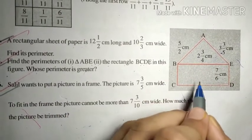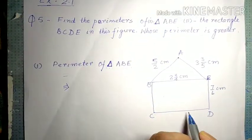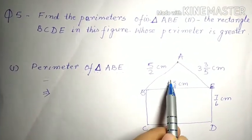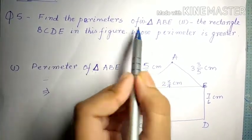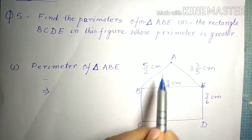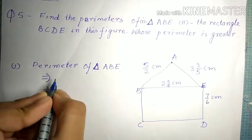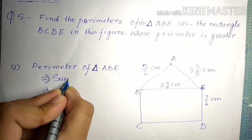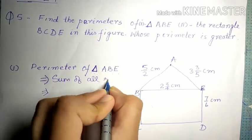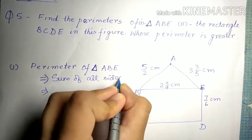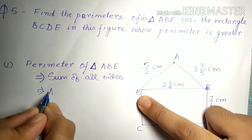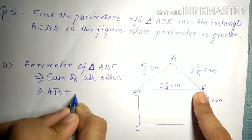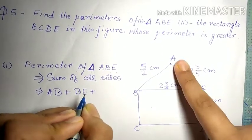There is a figure given and we have to find its perimeter. In this question, there are two shapes — one is a triangle and another is a rectangle. The question first asks for the perimeter of triangle ABE. The formula to find the perimeter of a triangle is the sum of all sides. So the sides of this triangle are AB + BE + EA.